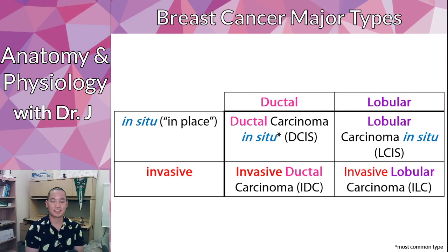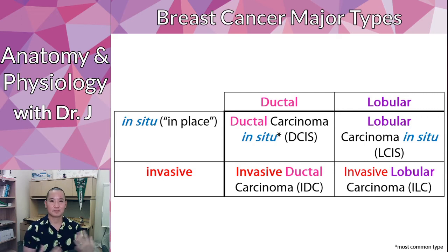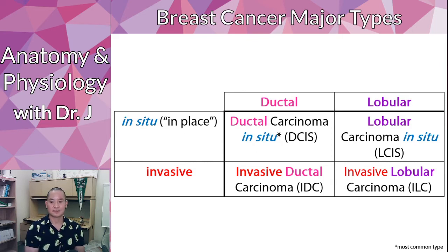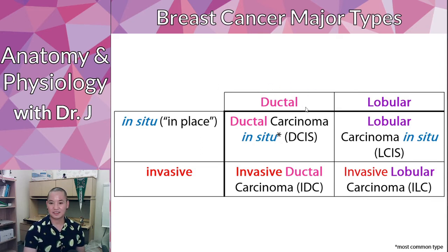Most breast cancers fall into these four major categories: is it ductal or is it lobular — where did it start — and if it's in situ, it's early because it's still in place where it started. But once it starts spreading, we call it invasive carcinoma. You can break it into these categories: where it started, and whether it is currently in place or now spreading.